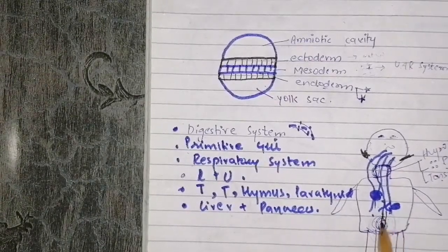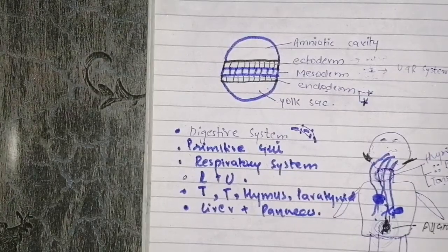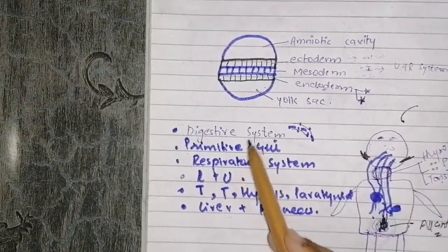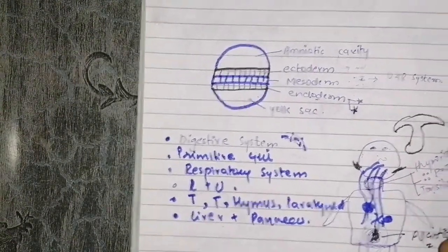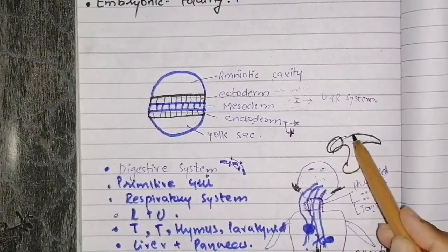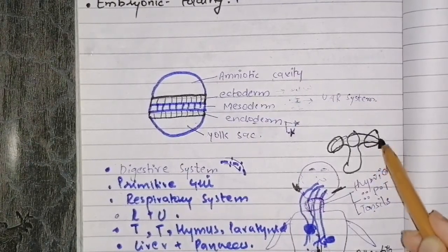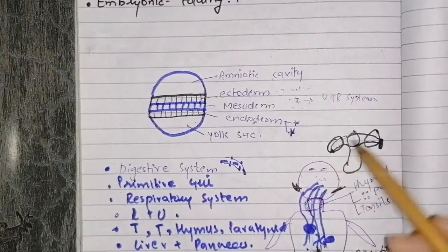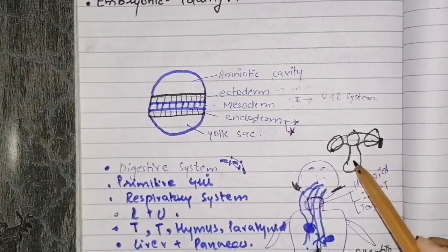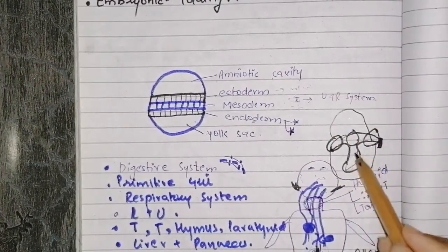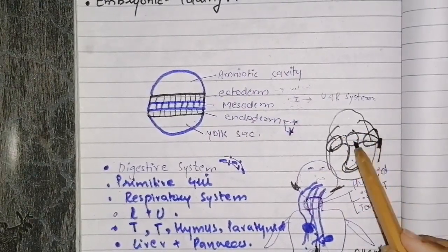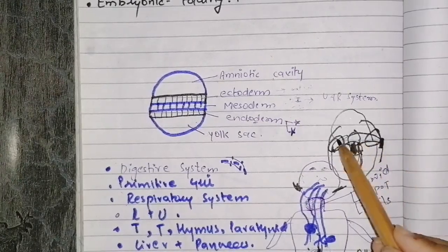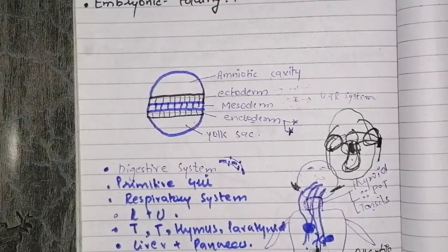Now regarding embryonic folding — when embryonic folding occurs, the primitive gut is formed. The primitive gut is divided into foregut, midgut, and hindgut, which has two openings: the urogenital opening and the anal opening. There is also the oropharyngeal membrane which is the oral cavity opening. The midgut communicates with the yolk sac through a structure called the vitelline duct. There is also the allantois and the cloacal membrane.